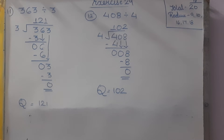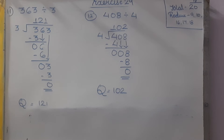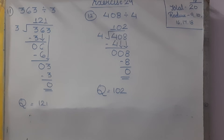Now, coming to exercise number 30. There are a total of 35 questions, in which we are going to reduce question numbers 9 to 12, 18 to 20, 24, 25, 29, 30, and 33, 34, and 35.